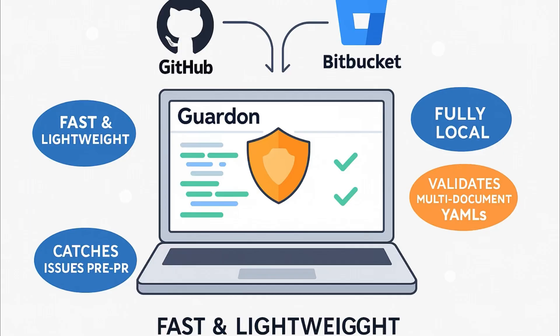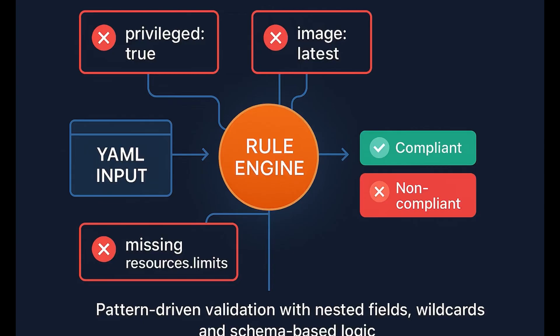Here is what makes Gardon powerful. It's fast, lightweight, and fully local. With the new background fetch helper, it can validate multi-document YAMLs or pull in configurations directly from GitHub or Bitbucket. That means you can catch problems even before a pull request is created — no waiting for a build or an external scan. At its core, Gardon uses a flexible rule engine — a pattern-driven validator that supports nested fields, wildcards, and schema-based logic. You can enforce custom organization policies like disallowing privileged containers, enforcing resource limits, or banning latest image tags, all defined as simple JSON or YAML rules.